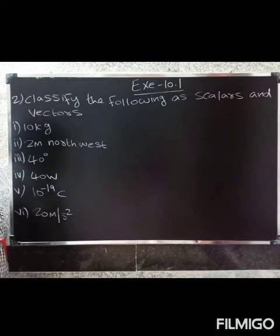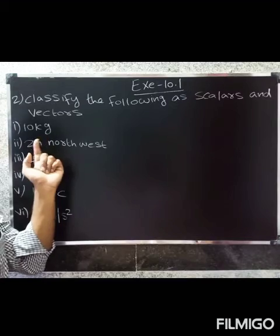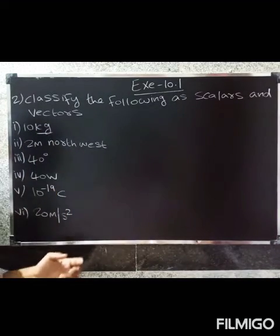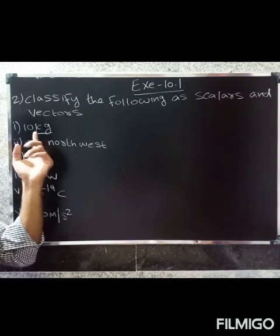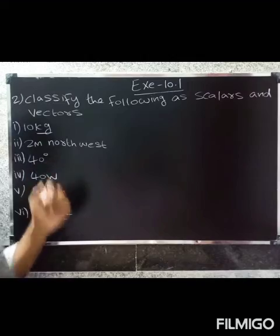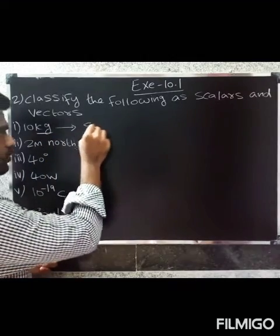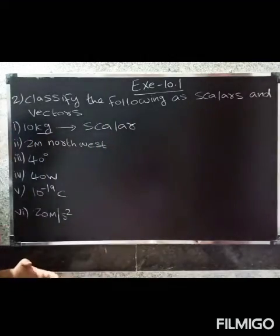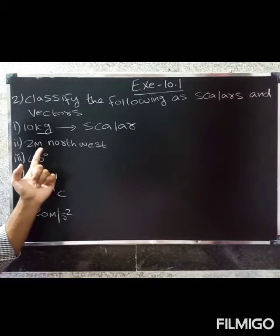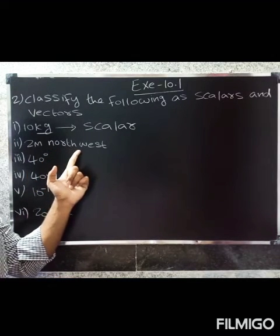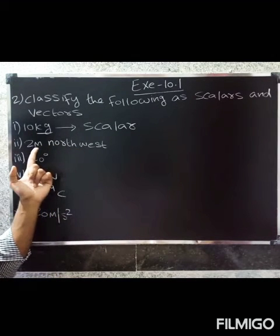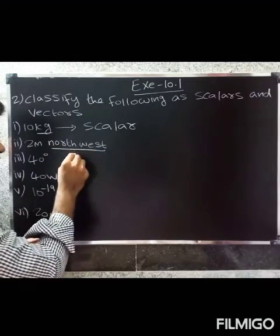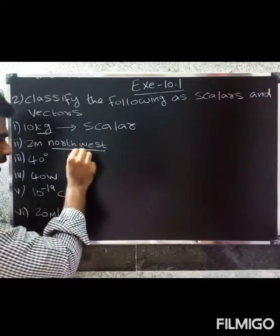10 kg is mass, which is a scalar — it has magnitude only, no direction. Next, 2 m northwest: 2 m is the magnitude and northwest is the direction, so this is a vector.